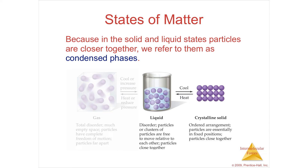Solids and liquids are called condensed phases because they're packed closer together than a gas. A solid with a highly ordered structure is said to be crystalline, and usually crystals are ionic — a lot of ionic compounds are crystals. Sodium chloride would be a cube, but other salts take different crystal structures, which you can see with different gemstones.